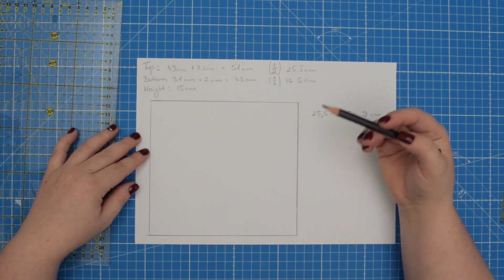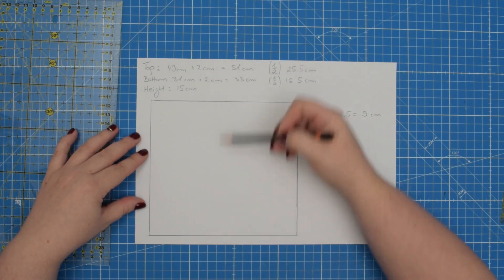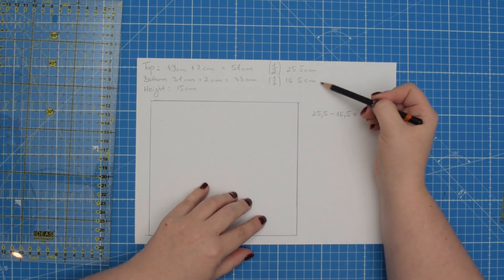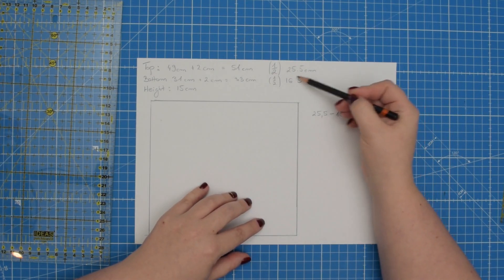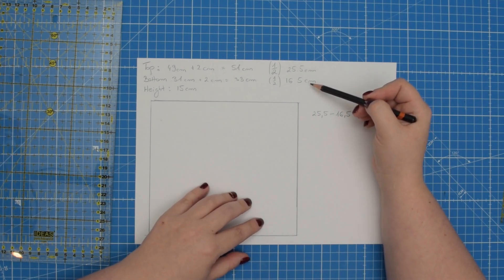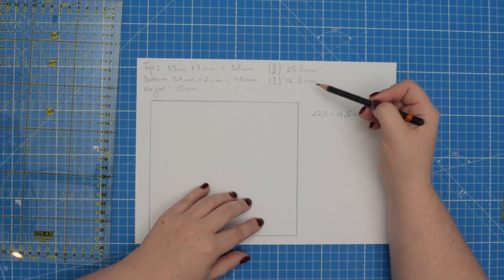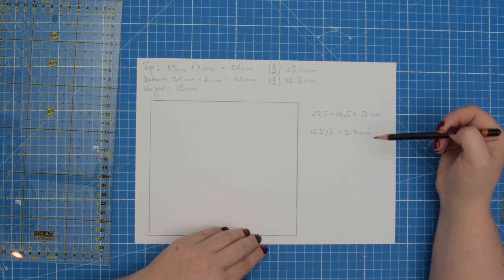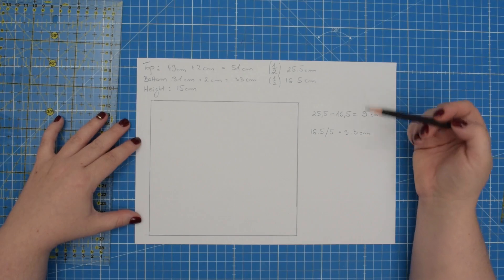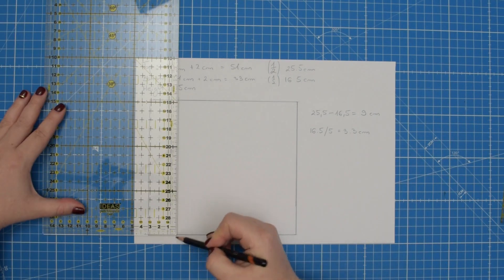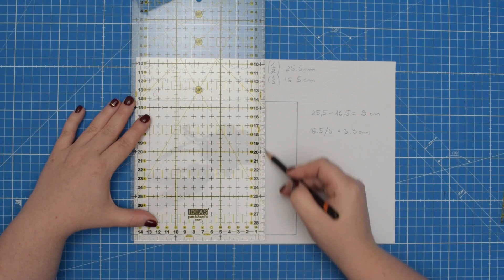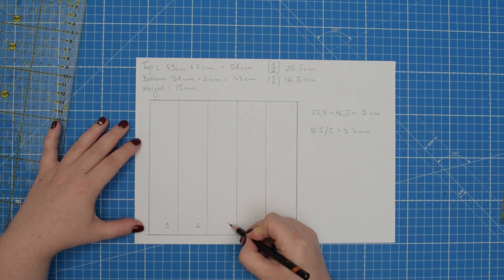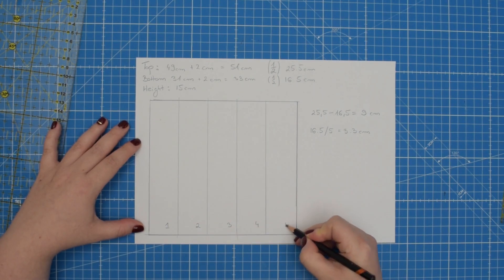To do that we are going to divide our pattern into equal sections. So you will take half of your bottom circumference and divide it into 5 or more sections. So for me this is 3.3 cm. So now I'm going to draw lines every 3.3 cm then we're going to number our pieces. So that's 1, 2, 3, 4 and 5.